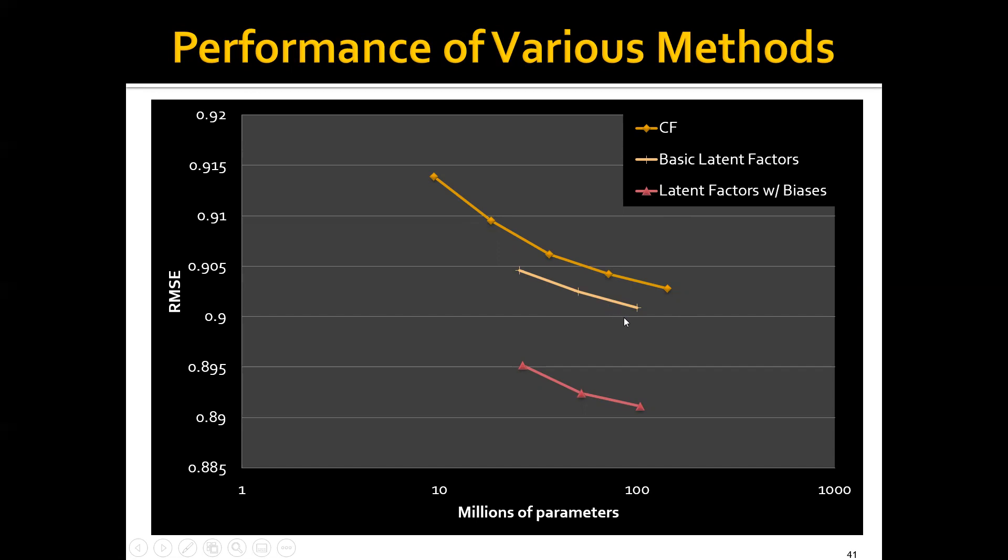If we extend it further with the user and item biases, we can do even much better and bring the RMSE down to here. Interestingly, we can see that the x-axis represents the number of parameters we need. At this point, we're actually already having 100 million of parameters. This is around the same number of the ratings that we have.